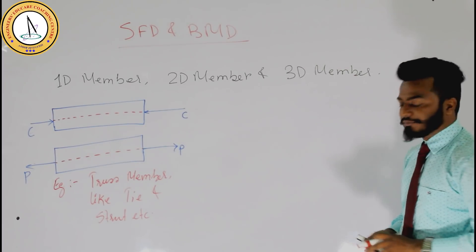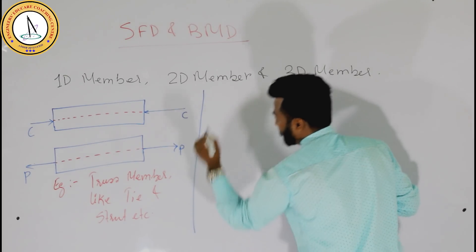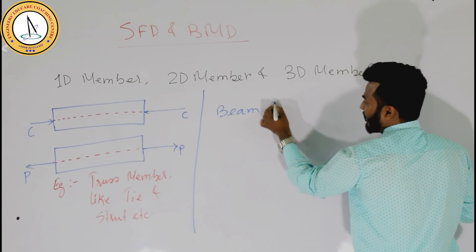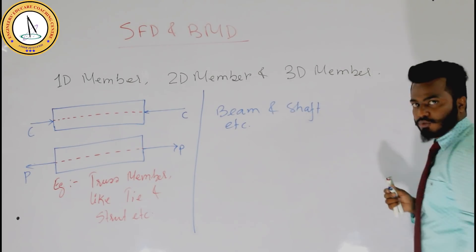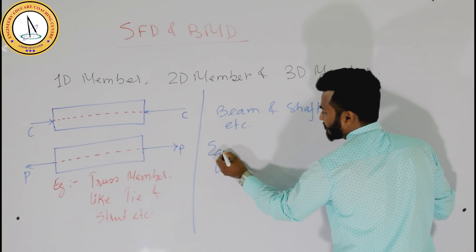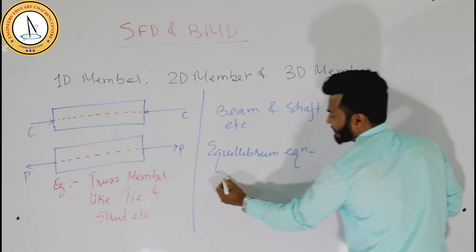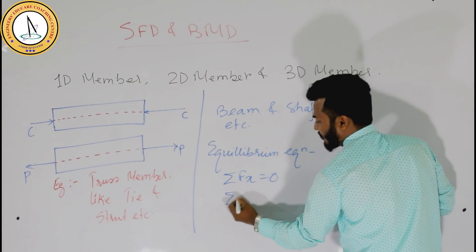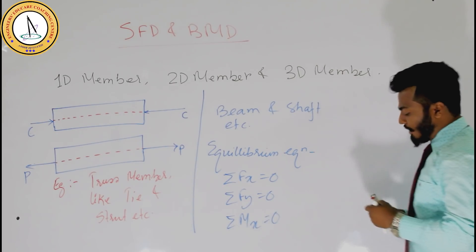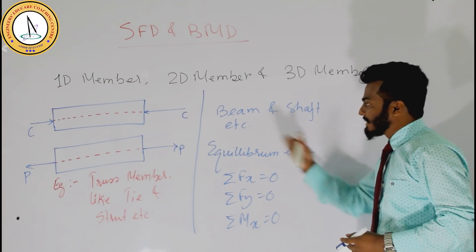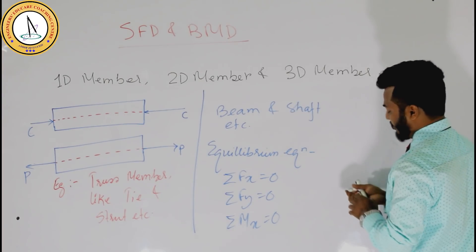Now let's explain the 2D members. The members which are acted upon by two-directional forces are 2D members. For example, beams and shafts. In this kind of analysis, we use equilibrium equations: summation of Fx equal to 0, summation of Fy equal to 0, and summation of moment about x equal to 0. I will clearly explain as the video goes on why we use these three equations in the case of 2D members.